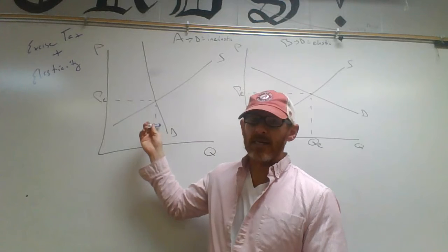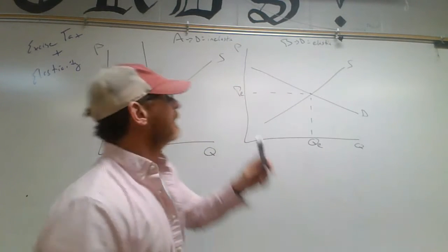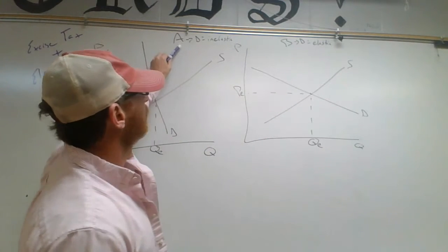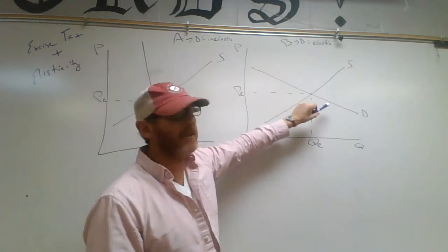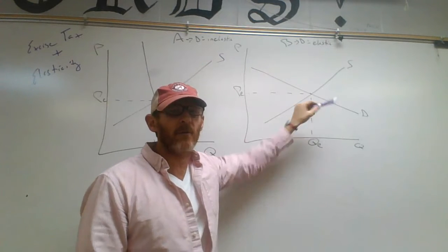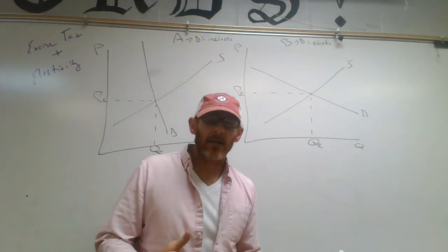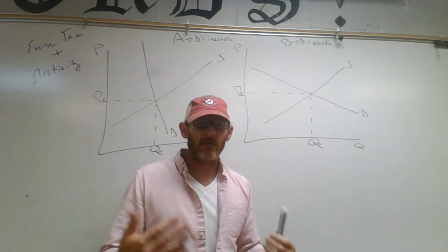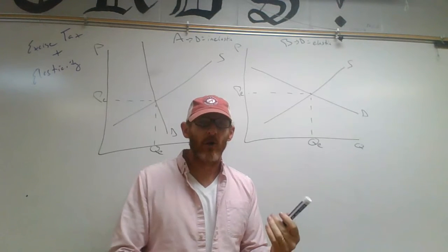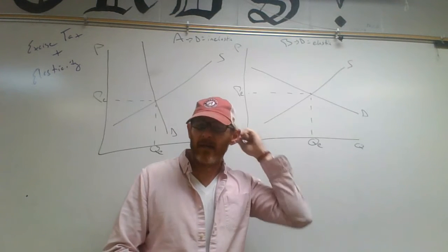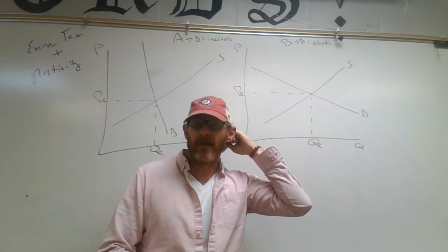You can see that this is a more inelastic demand curve — this is Graph A. Here in Graph B, you can see the demand curve is more elastic. We're going to look at what a $2 tax put onto a good looks like.